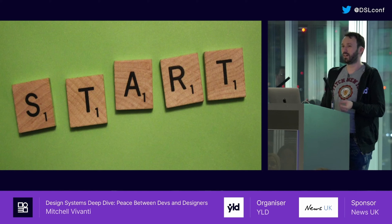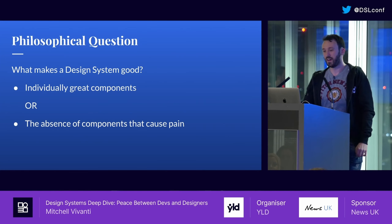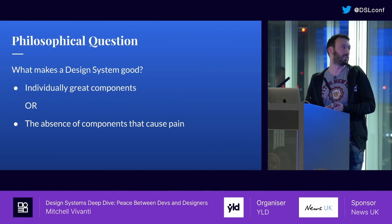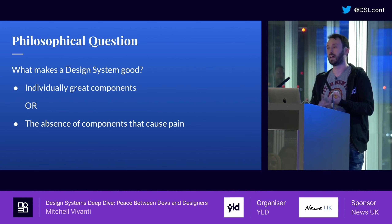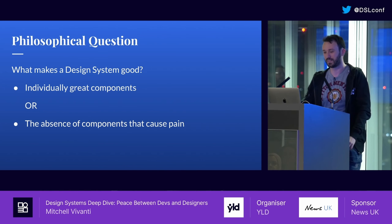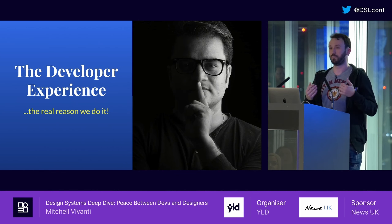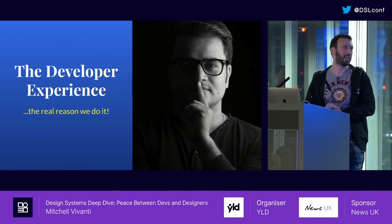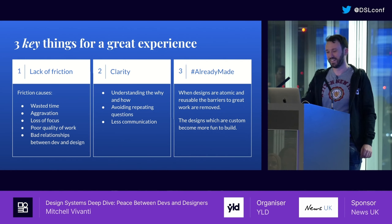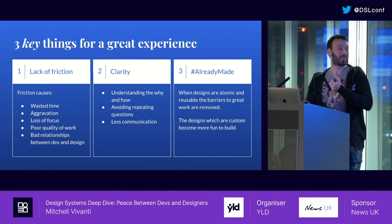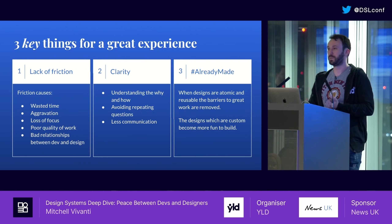So the motto for most developers is work smarter not harder. Achieve efficiency very quickly: automate what you can, focus on the bigger picture and do the cool stuff instead of having to decide on things like corner radius. They care more about how things are structured. Let's begin and actually start to try to achieve peace. Thinking about design systems is a philosophical question. What makes a design system good? Individually great components or the absence of components that cause pain? I'm going to say the real reason we make design systems is for the developer.